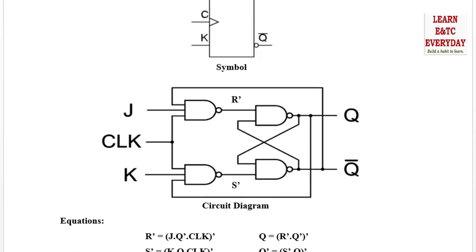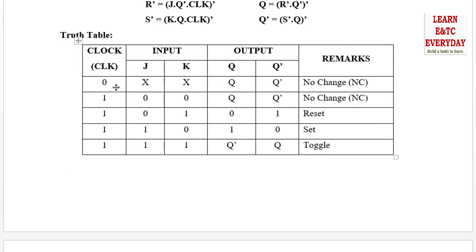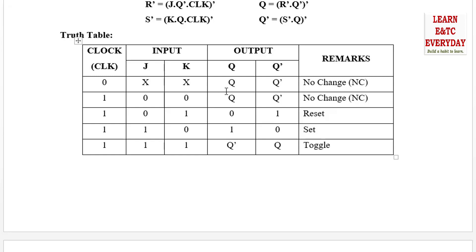The JK flip-flop has four operating cases. When clock is 0, the output is no change — don't care terms apply, meaning J and K values don't matter. When clock is 1 and J equals 0, K equals 1, the flip-flop resets. When clock is 1 and J equals 1, K equals 0, it sets. When clock is 1 and J equals 1, K equals 1, the flip-flop toggles.